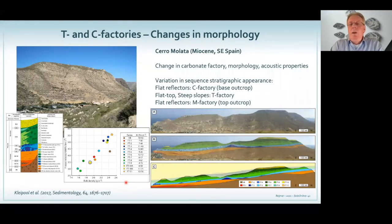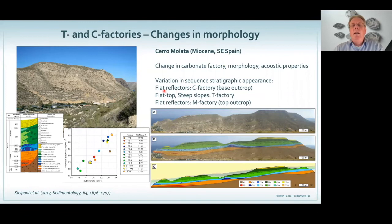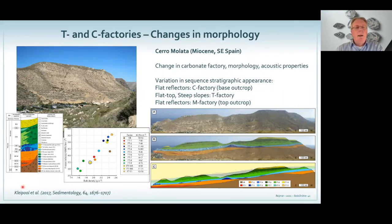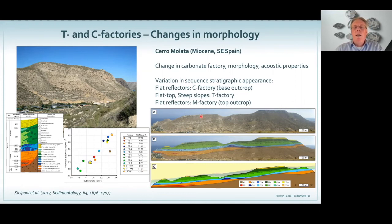If you ever have the chance to go to the southeastern part of Spain, there's a very nice mountain chain, Sierra Mulata, and it shows everything — the flat reflectors of the C factory at the base, a flat-top platform, and it ends up with microbes. When you do some modeling like Luke Lipold has done based on different types of plugs, you can make seismic models out of your outcrop and see the different types of reflectors that you will get when comparing different types of carbonates.